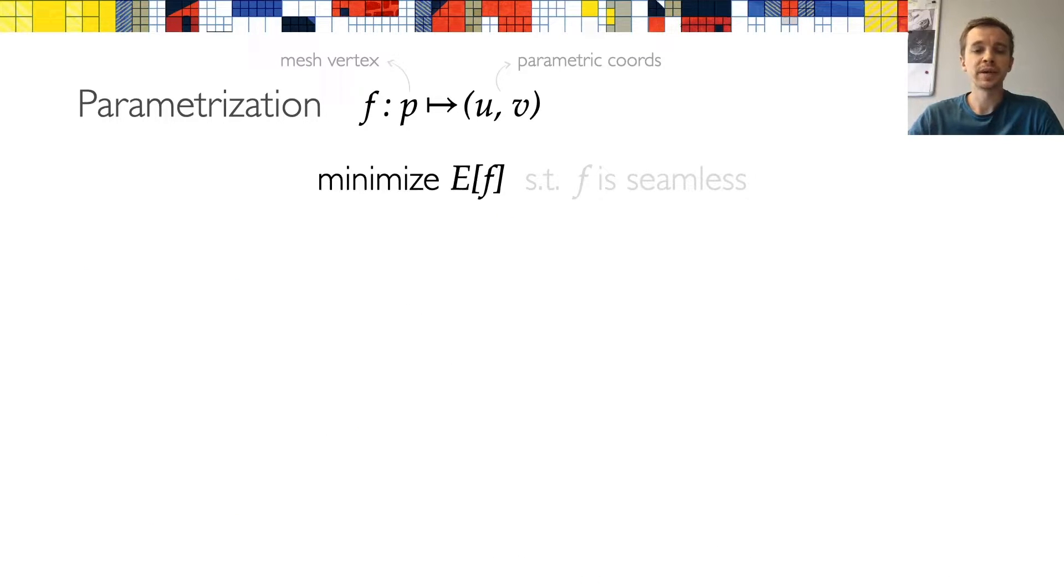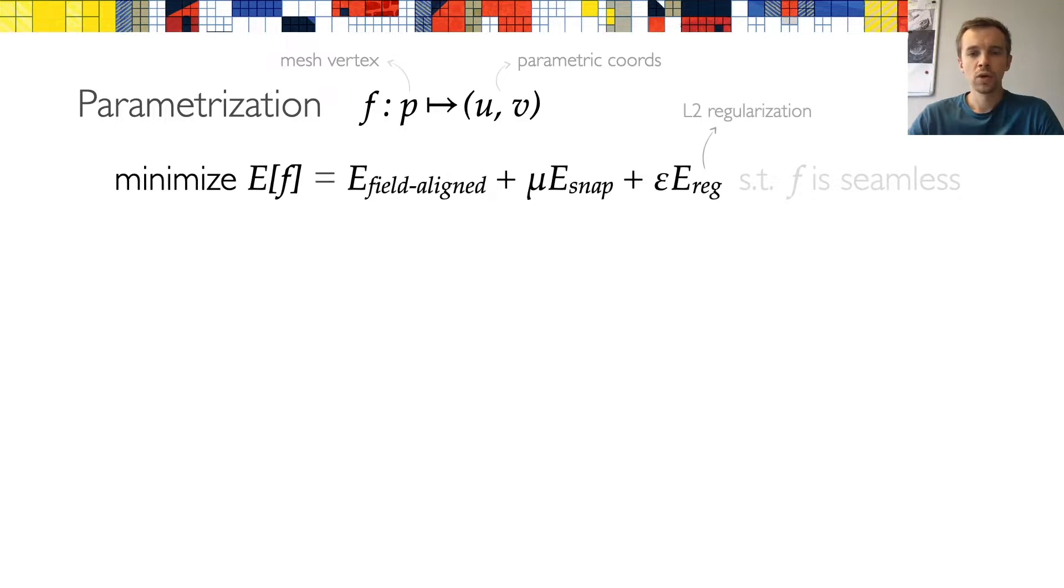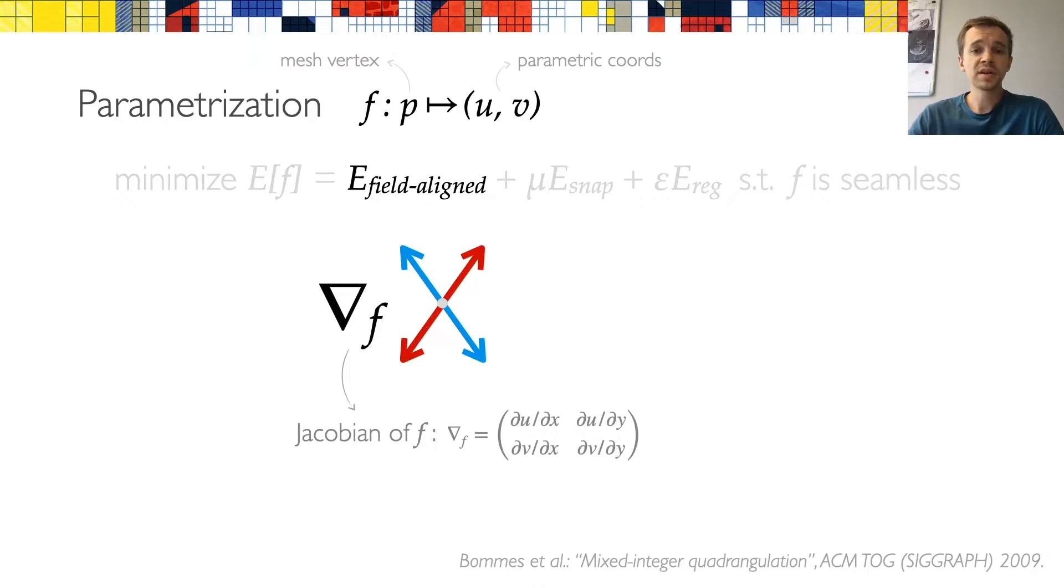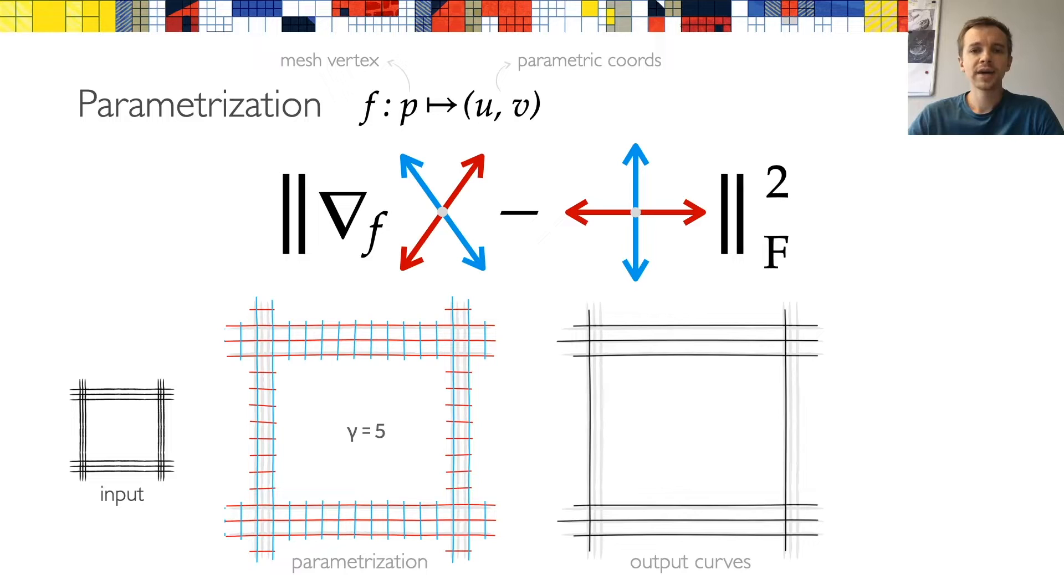Let's now have a look at the energy that we minimize. When computing the parameterization, we have two main goals, and these directly translate into two energy terms, plus a small L2 regularization. The first term is responsible for aligning parameterization iso lines with the frame field, and by extension with the input strokes. Here we use a standard Poisson term, which simply expresses the fact that a frame should be mapped to the canonical frame.